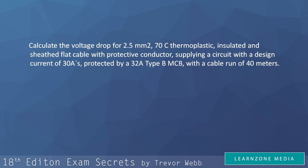In other words, a 2.5 millimetres square flat twin and earth cable has voltage drop of 18 millivolts per amp per metre. So this is our first value that we can insert into the formula.